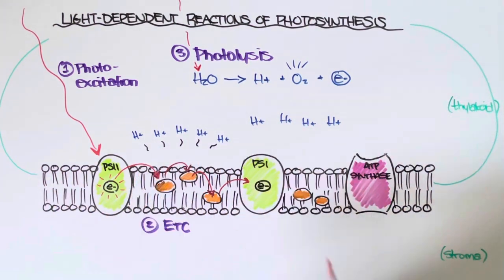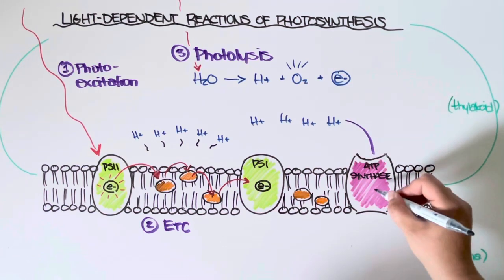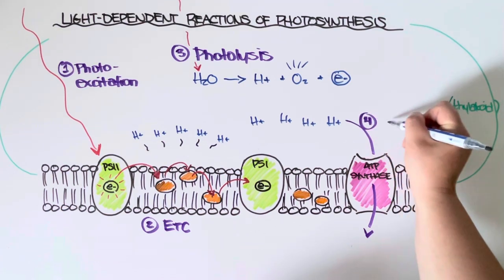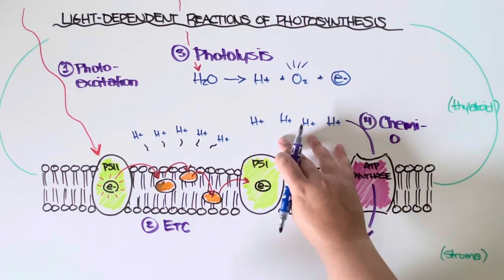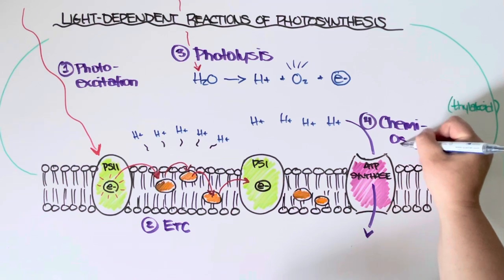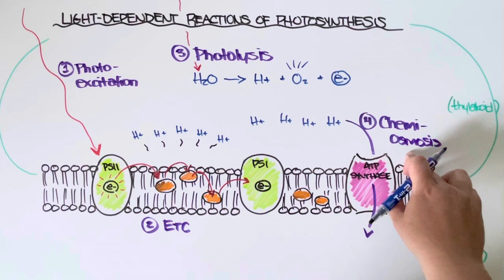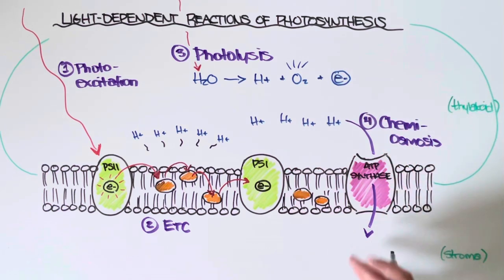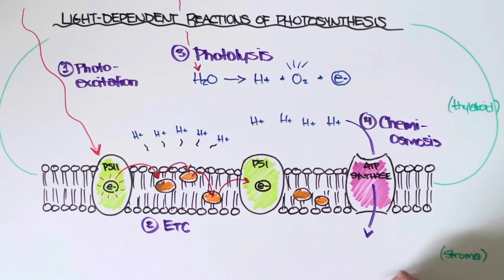Now, the reason why building this hydrogen ion gradient is so important is because it is going to be used to facilitate the next step, which is called chemiosmosis. Chemiosmosis, or step number four, is just the movement of those hydrogen ions from high to low concentration. And we know osmosis is a form of passive transport. So going from high to low means that no additional energy is required to move the hydrogen ions through this protein.